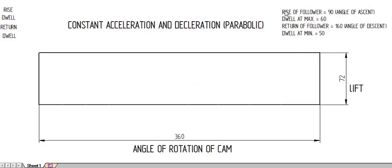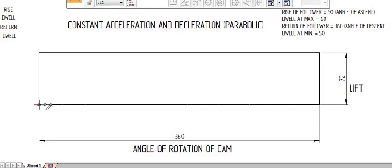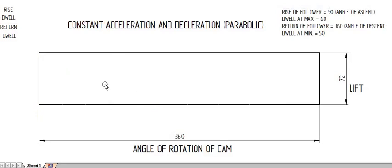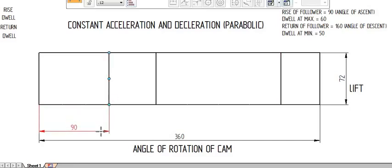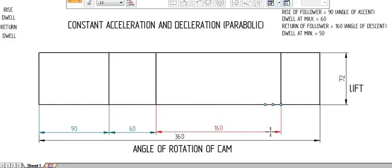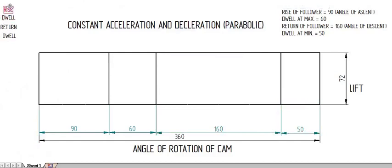We have to divide the total section into each region: rise, dwell, return, and dwell. The first part is the rise region, followed by the dwell region, then the return region, and last is the dwell at the minimum. By dimension, this will be 90 degrees for the rise, 60 degrees for dwell at maximum, 160 degrees for the return of the follower, and 50 degrees for dwell at the minimum.